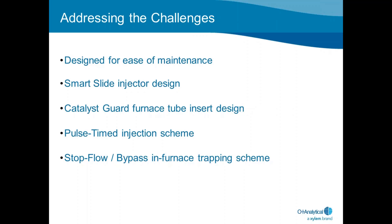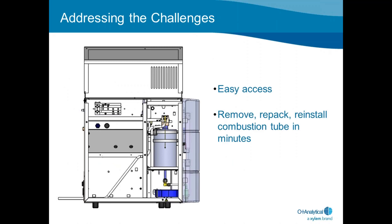For maintenance of the system, the furnace was moved to the front of the system on the side for easy access. You simply lift and take off the side panel, and in most cases the combustion tube can be removed and repacked literally in a matter of minutes instead of hours. Being able to simply get to it in order to work on it was an important design criterion for the instrument.